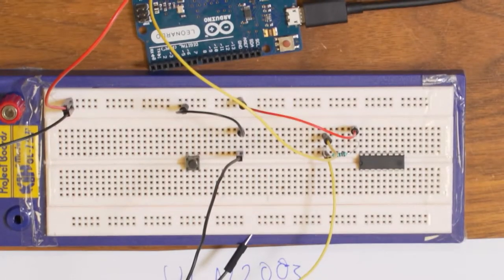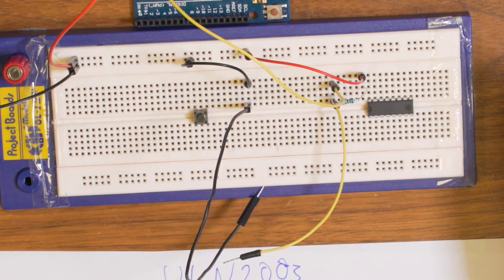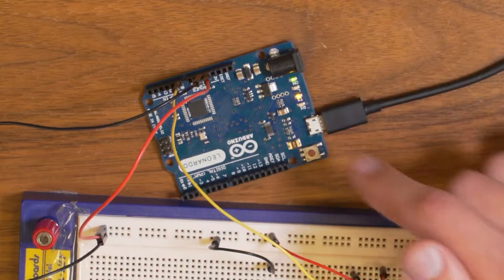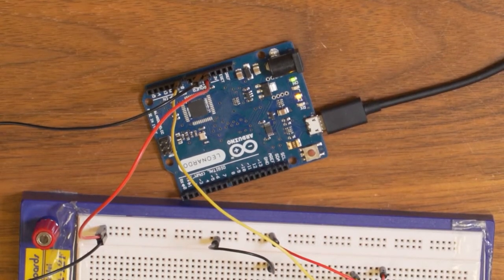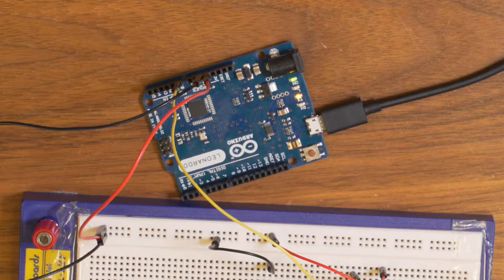So the ULN can be used with Arduino to run things that need more power, basically. Because the Arduino itself can only provide small currents and also only small voltages, 5 volts basically.